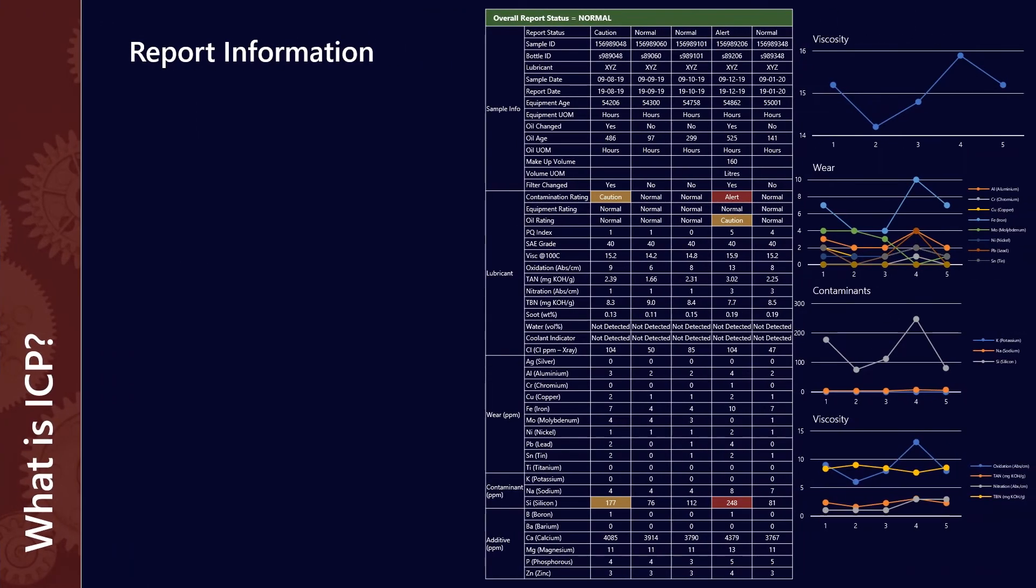ICP is a really common method for testing a lot of the parameters that you'll see on a used oil analysis report. In fact, your wear metals, contaminants, and additives are almost all tested by this method. So that makes it really important because it comprises almost half of all the results that you'll see on a typical used oil analysis report.